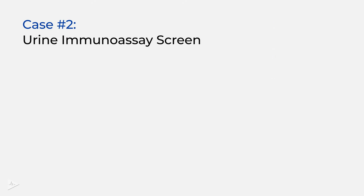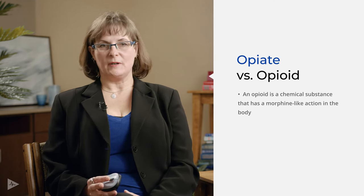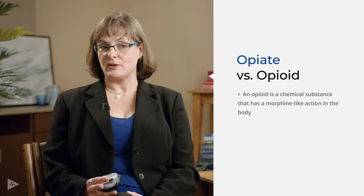Now let's go on to another case. We have a 50-year-old female prescribed methadone. Here we have another set of immunoassay screening results — in this case, the opiates are presumptively positive. So you ask yourself: is my patient taking the methadone? I'm going to go into some terminology. Opiates versus opioids get used interchangeably and are often used incorrectly. An opioid is a chemical substance that has any morphine-like action in the body.